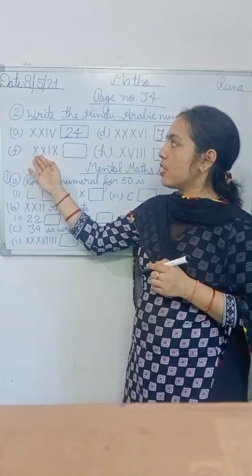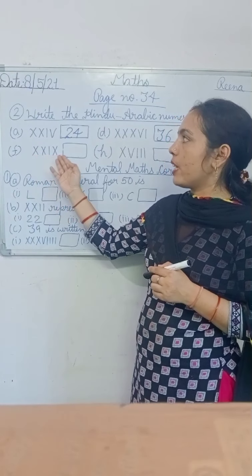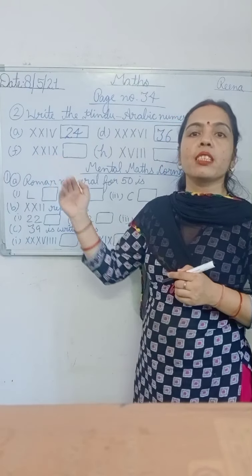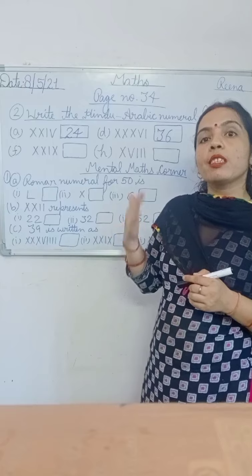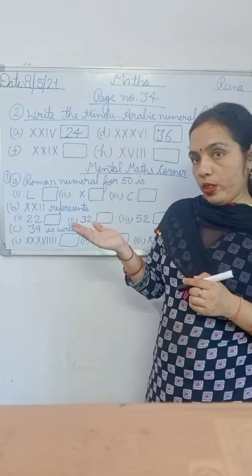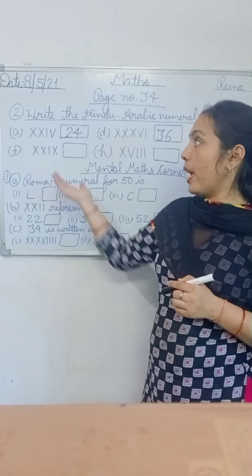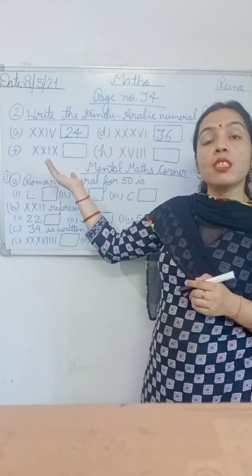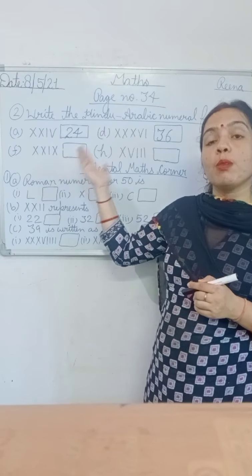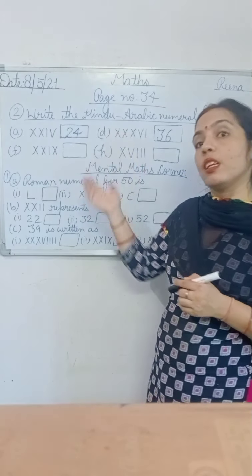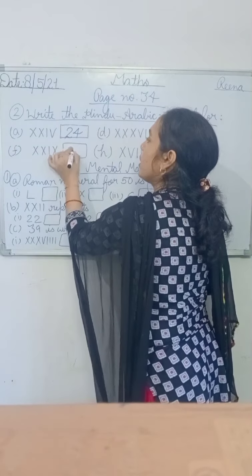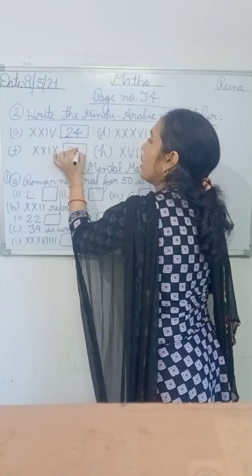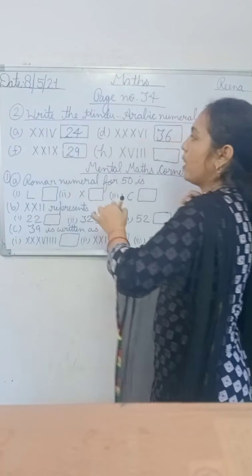Now part F is XXIX. XXIX means XX is 20 and IX means 9. That means 29. Now write 29 here.